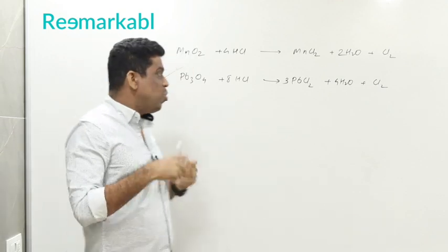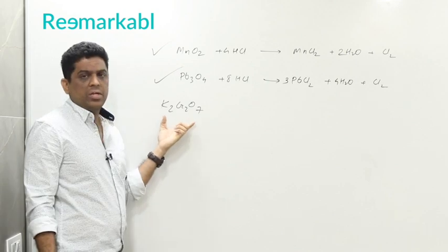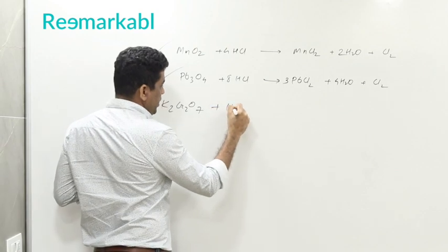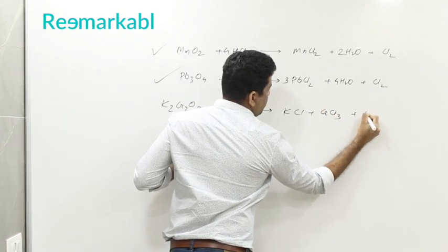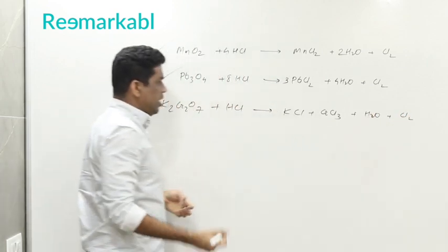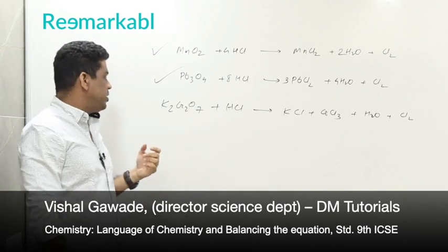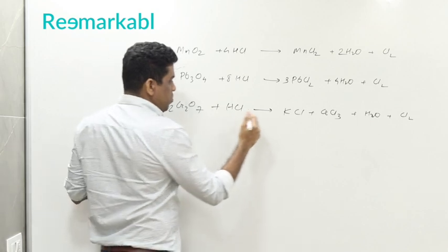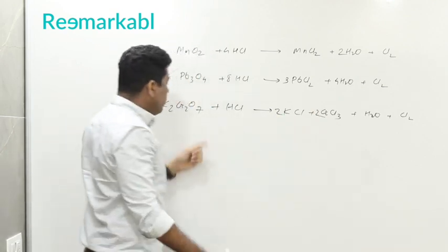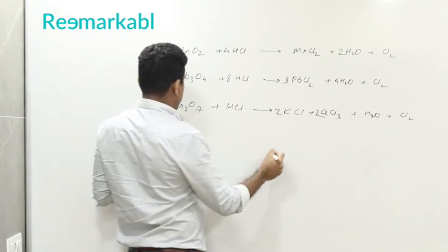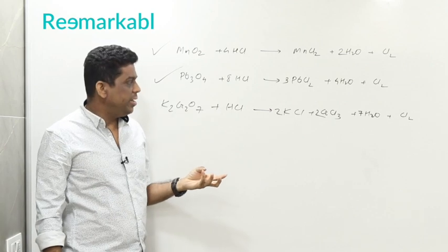Next, a more difficult equation: K₂Cr₂O₇ — potassium dichromate — with HCl gives KCl, chromium chloride, water, and chlorine. We have two reactants and four products. Using the same trick, start from the left: how many potassium atoms? Two — make it two on the right. Chromium atoms? Two on the left, one on the right — make it two. Oxygen atoms? Seven on the left — make it seven water molecules. So potassium, chromium, and oxygen are now balanced.